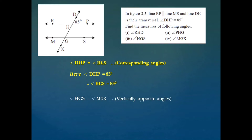Lastly, angle HGS is equal to angle MGK — again these two are vertically opposite angles, so they must be congruent. Since angle HGS is equal to 85 degrees, therefore angle MGK is also 85 degrees. So we have found the measures of all the angles using properties of parallel lines.